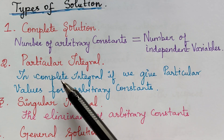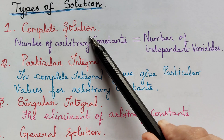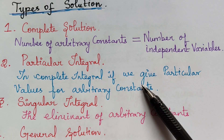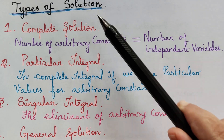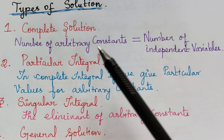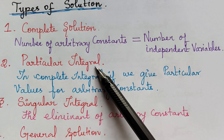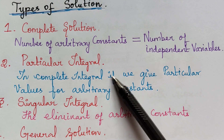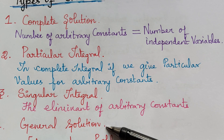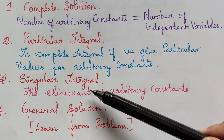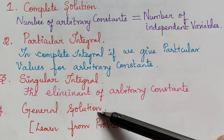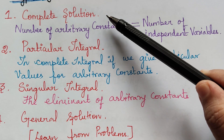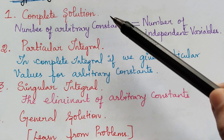And what is a particular integral? If in the complete solution we give particular values for the arbitrary constants, then it will be known as a particular solution, which will be found only if it is asked in the question. Whereas the singular integral and general solution are to be found compulsorily along with the complete solution.